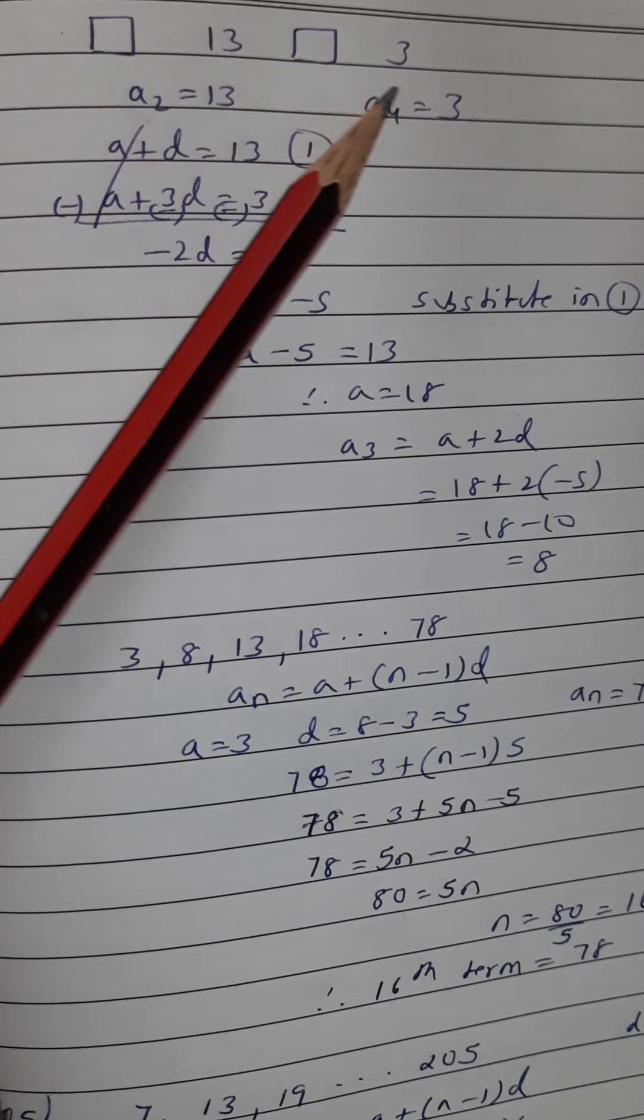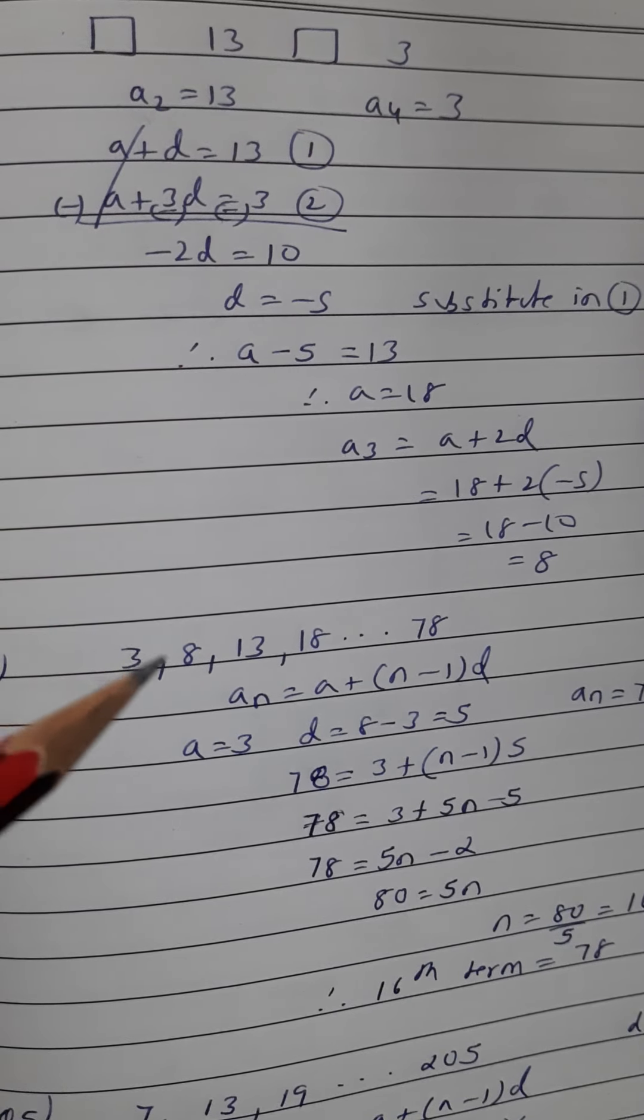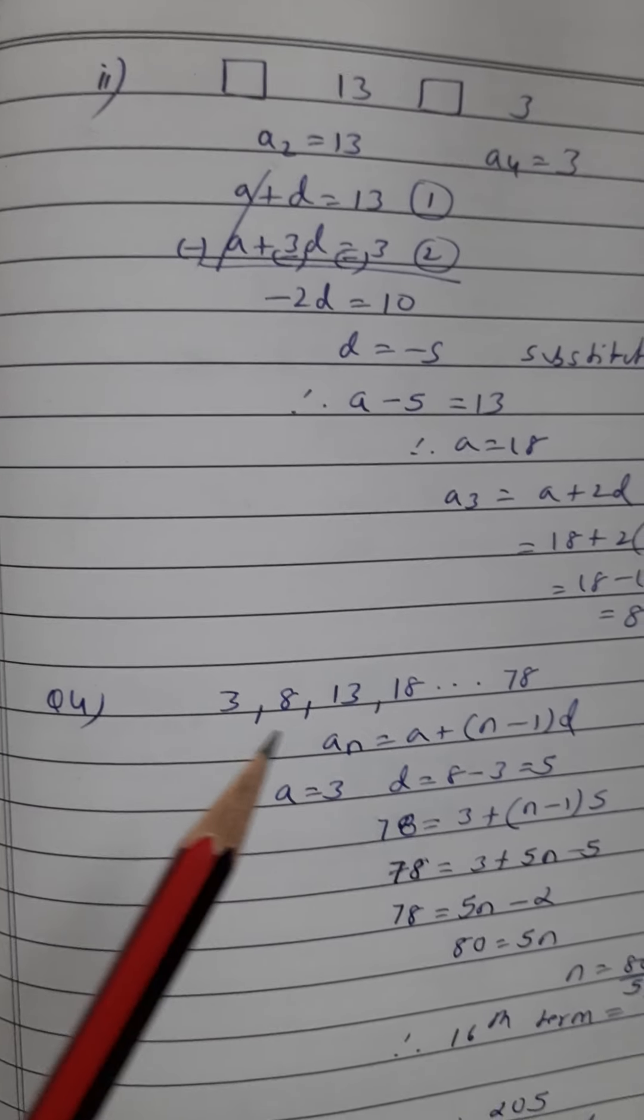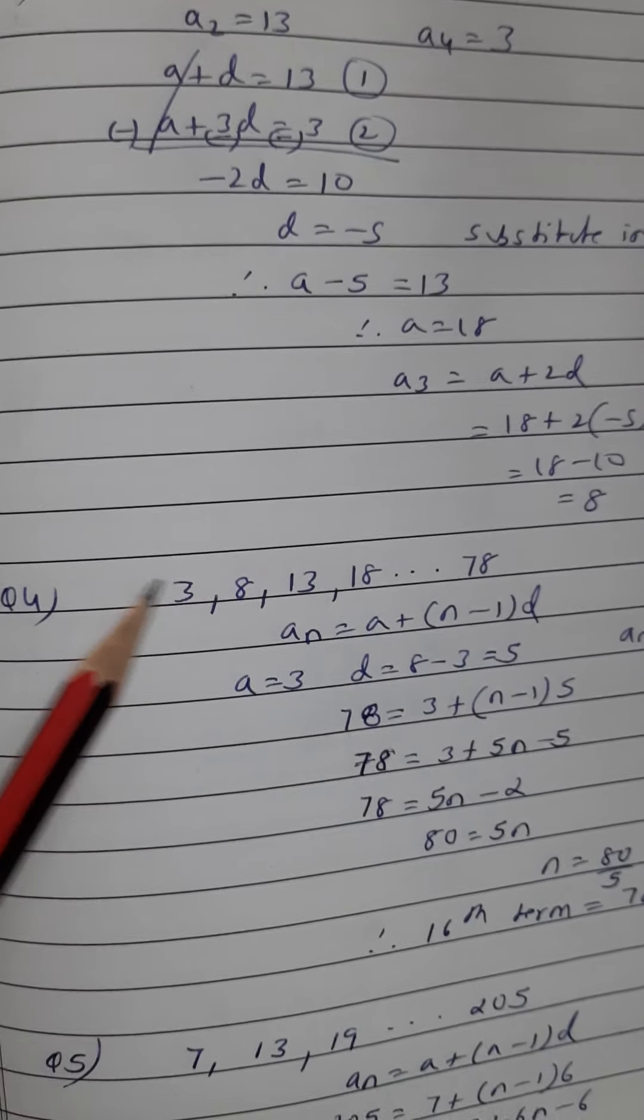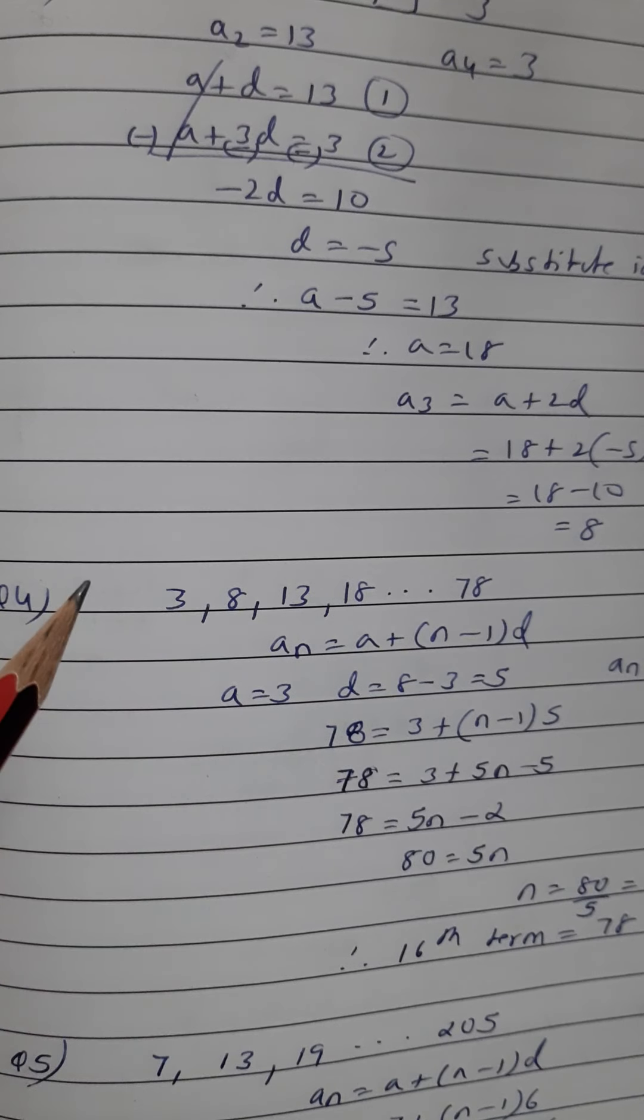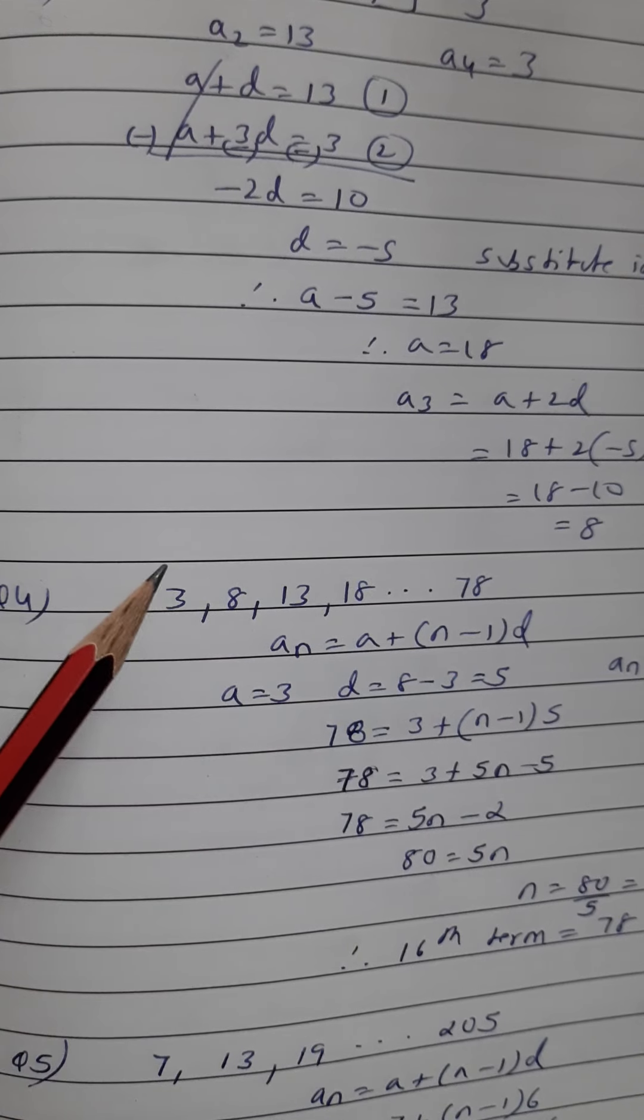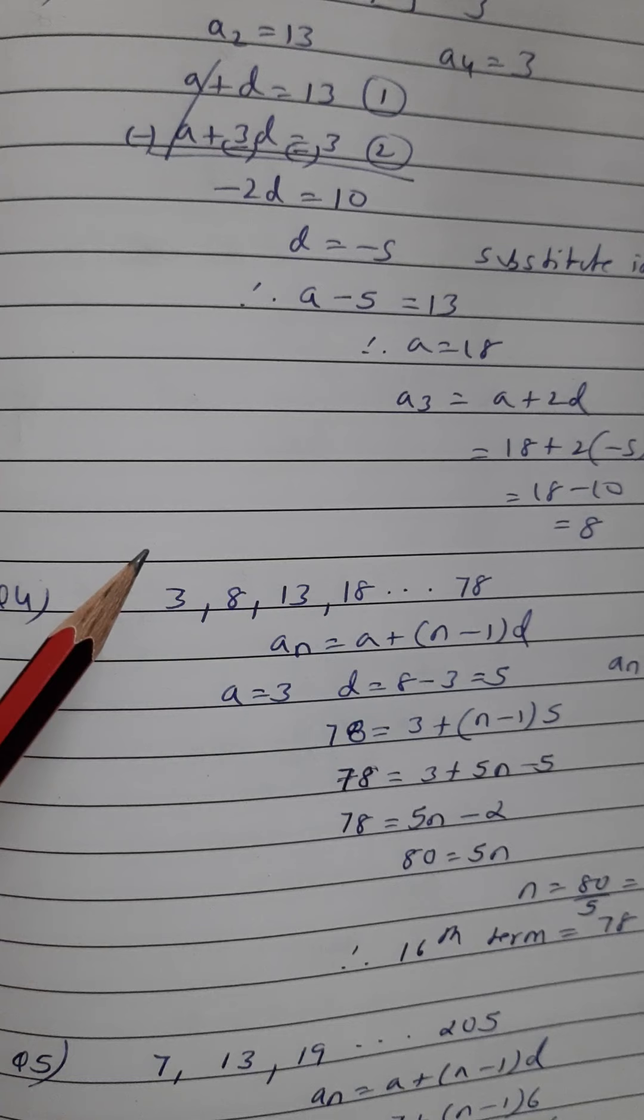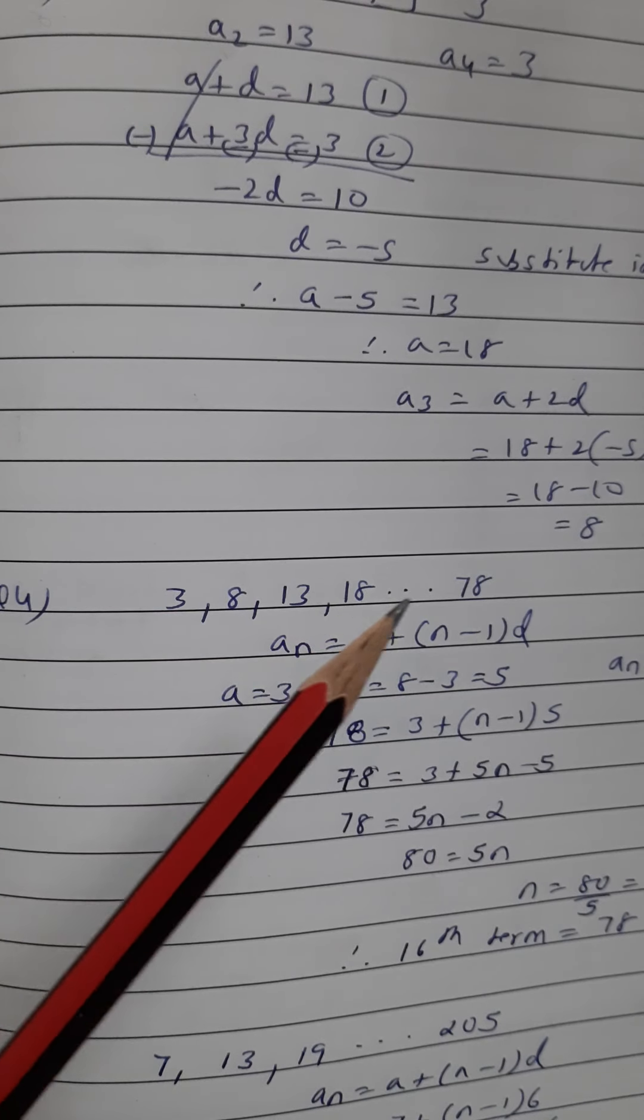Then we move on to the next question, that is question number 4. In question number 4, a series is given which is in arithmetic progression, and the question is that you see dots are there. We have to find out how many terms are there. What is the total number of terms in this arithmetic progression: 3, 8, 13, dash dash dash up to 78?